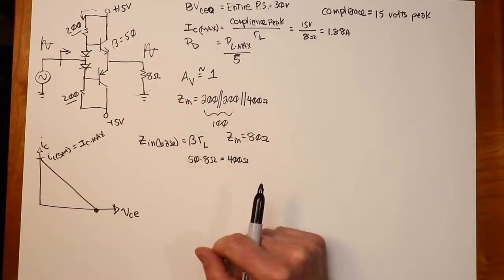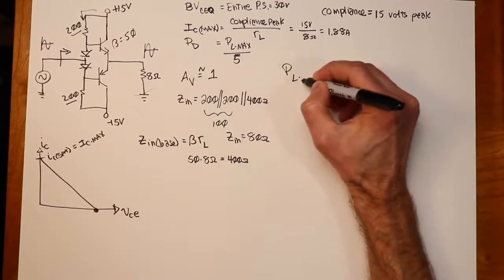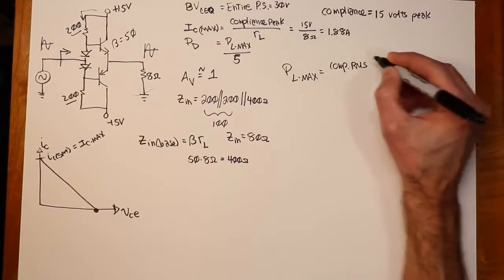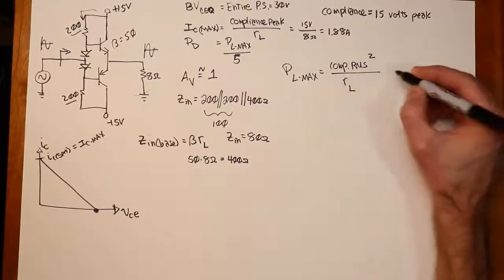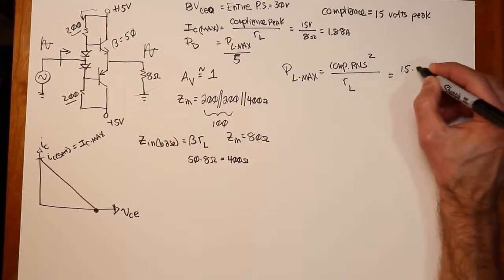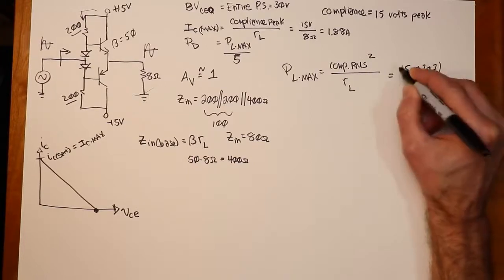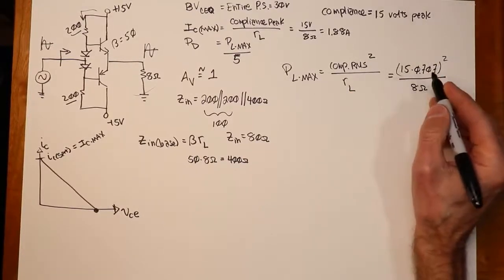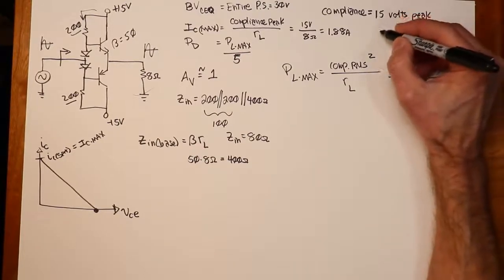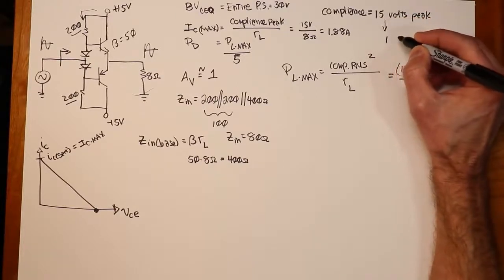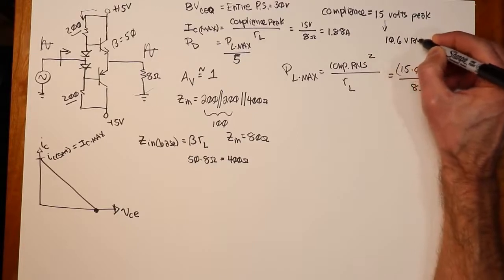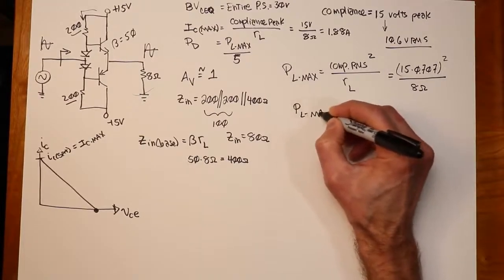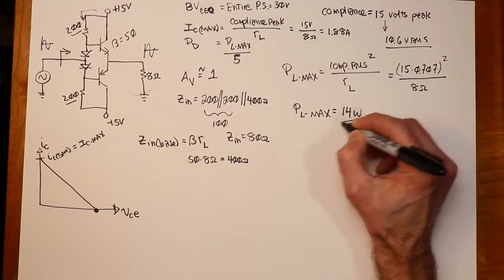In any case, getting back to our power calculation, right? I want to find out what P-load max is. So we have to take our compliance, turn that into an RMS value, square it, divide by your load impedance. So we've got 15 volts peak, multiply that by your RMS fudge factor 0.707. Square that divided by 8 ohms. So your compliance, right, is going to be a little over 10 volts. It's actually, you know, if you do this, you're going to get about 10.6 volts RMS. All right, so you'd say 10.6 volts RMS. You square it, you divide it by 8 ohms. Your P-load max is going to turn out to be 14 watts, okay?